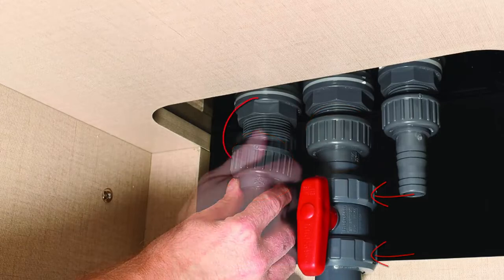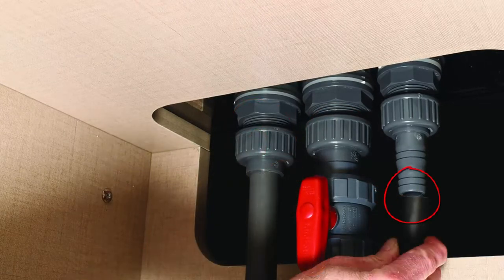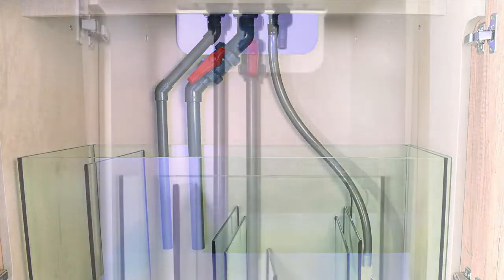For reference, the middle pipe is the main drain. This is the one that needs the ball valve. On the right is the return line and the left is the overflow.